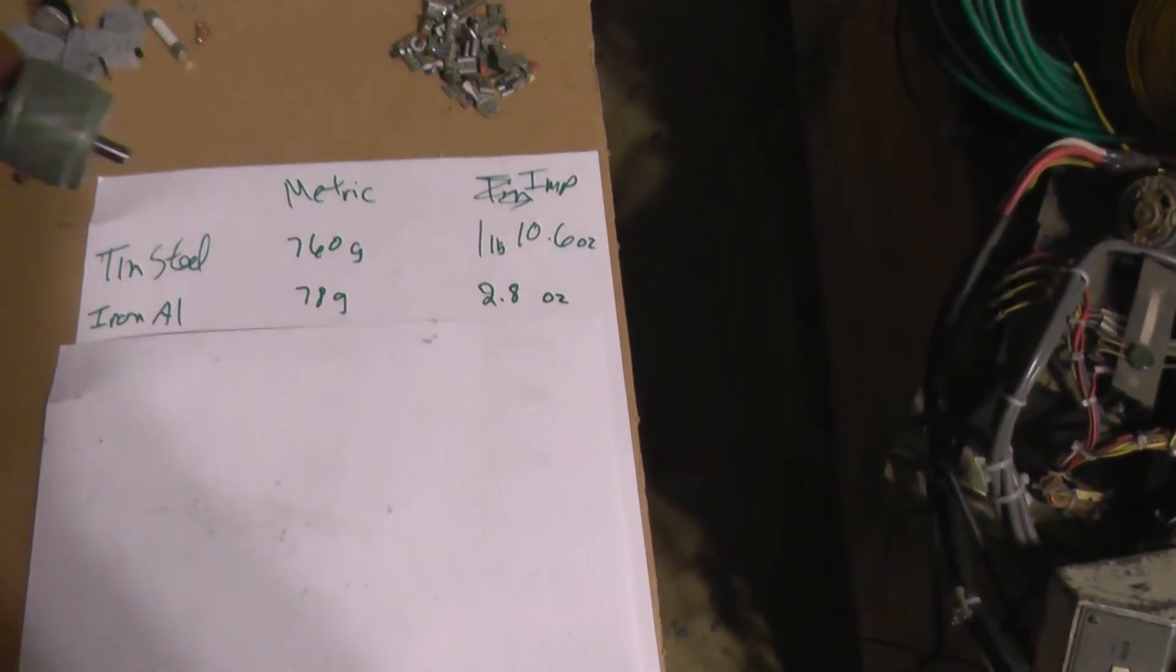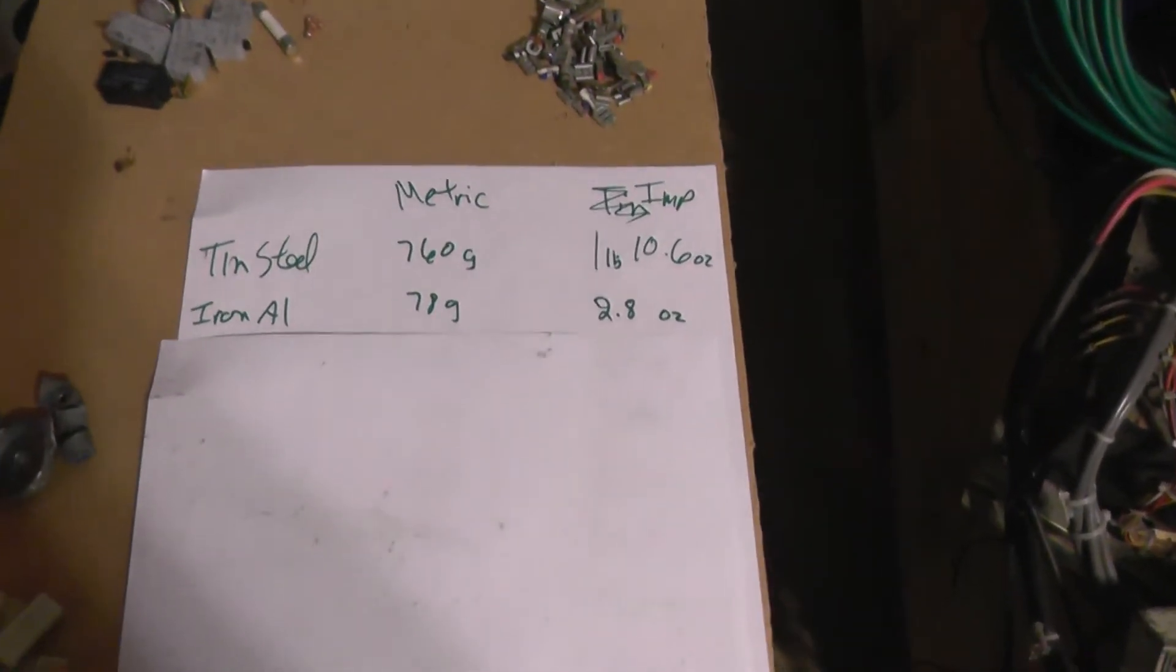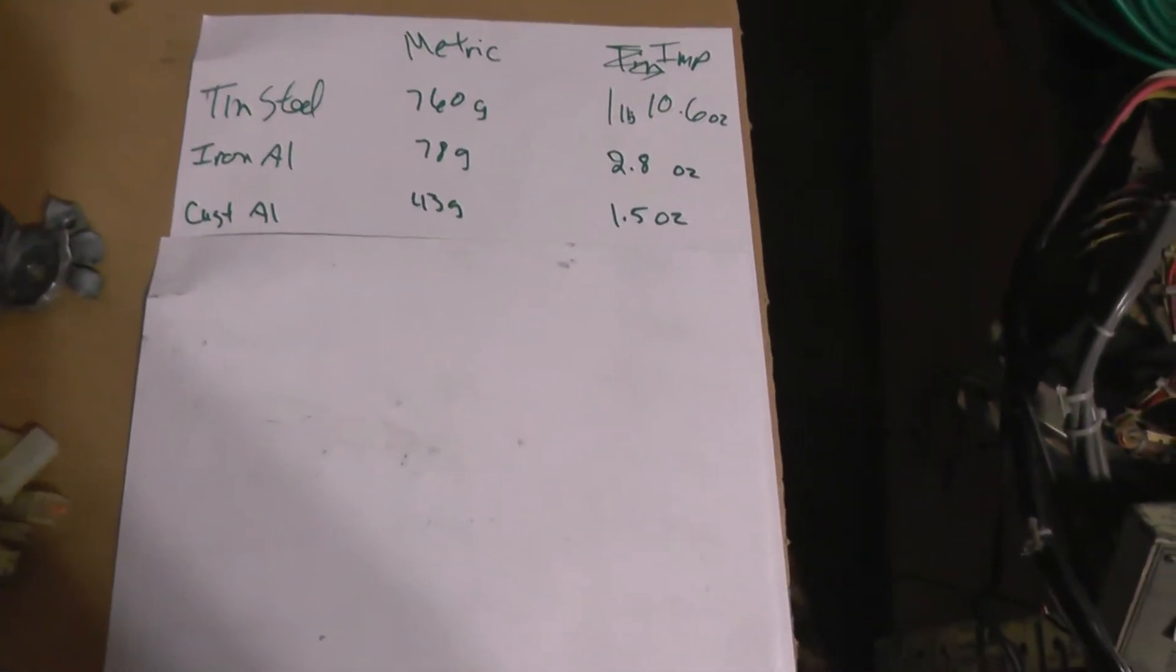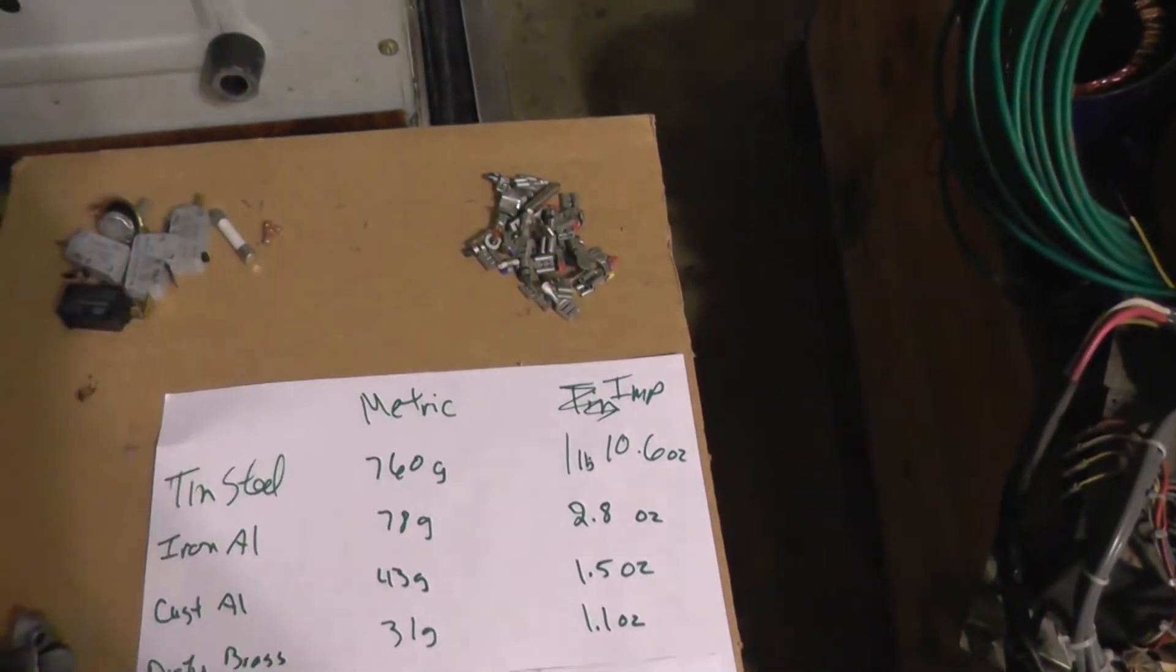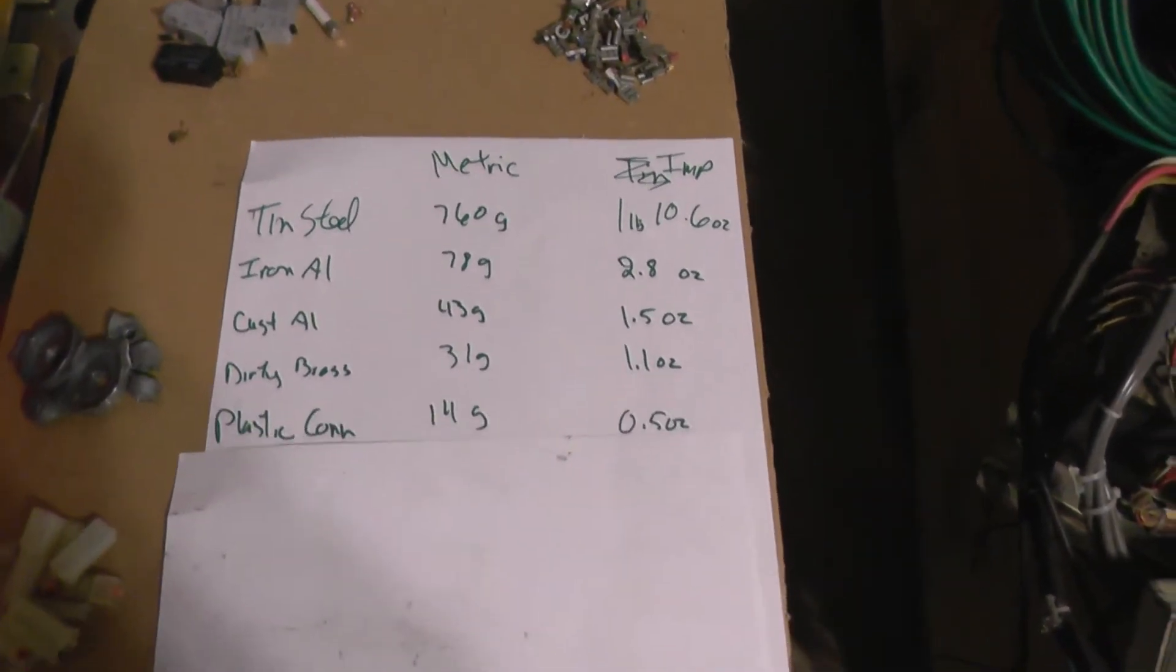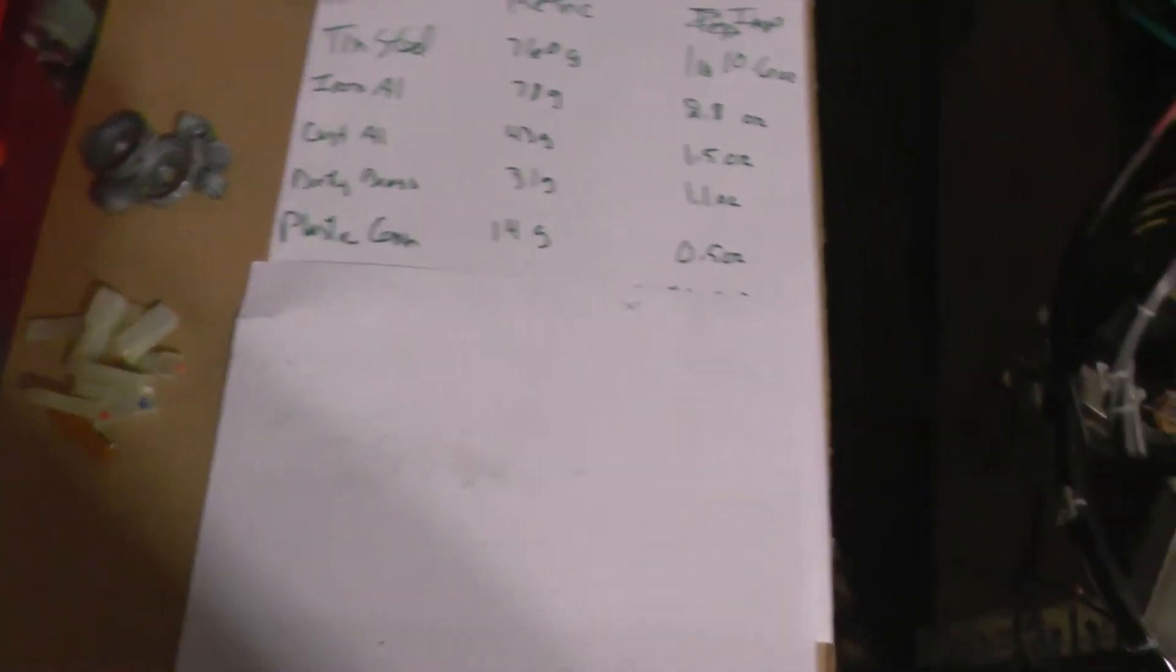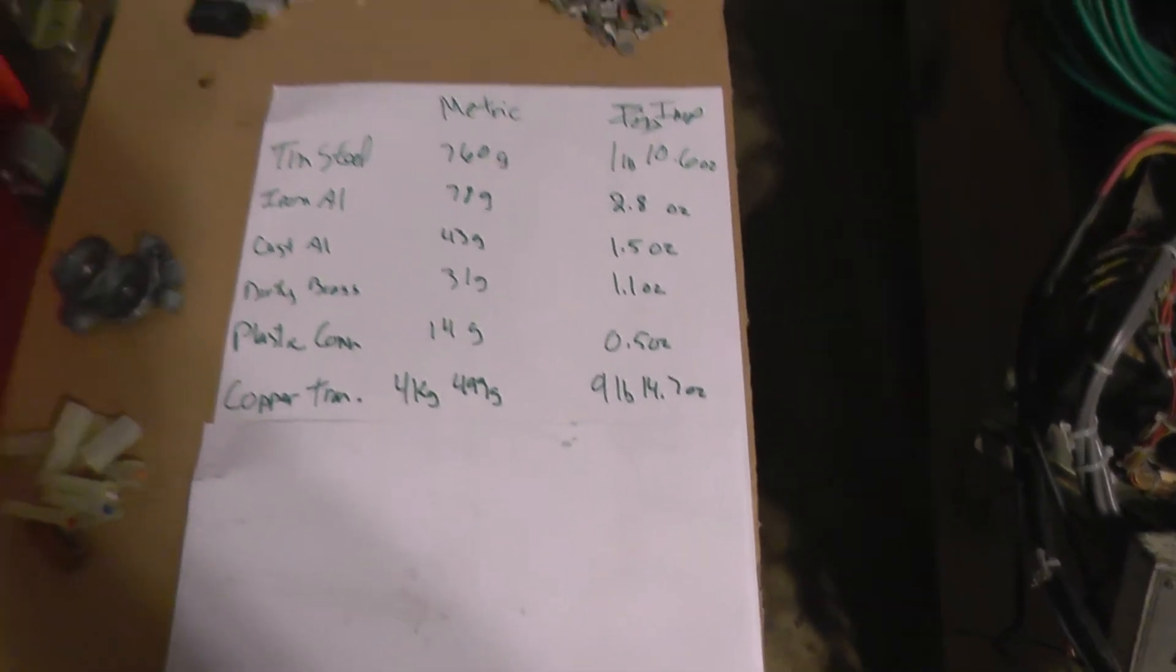The irony aluminum, which is a little bit of a motor bit here, 78 grams, or 2.8 ounces. The cast aluminum, which came off the other parts of the motor, 43 grams, or 1.5 ounces. The dirty brass, that's the clipped ends there, 31 grams, or 1.1 ounces. The plastic connectors, which I'm not sure if you can or not, but I'm going to try and get dirty brass for those. 14 grams, or half an ounce.